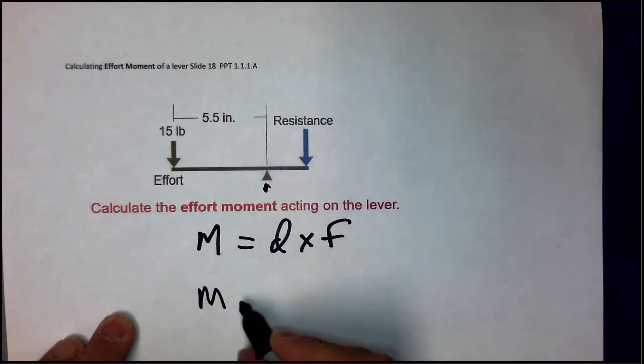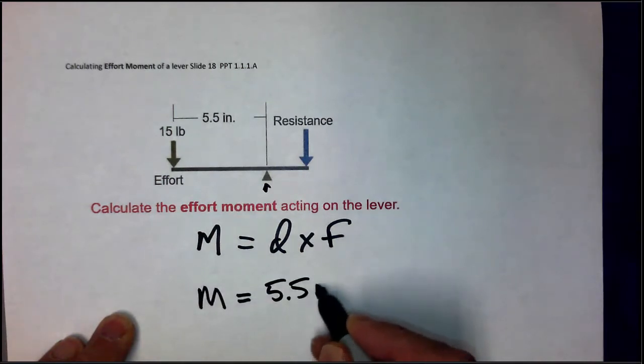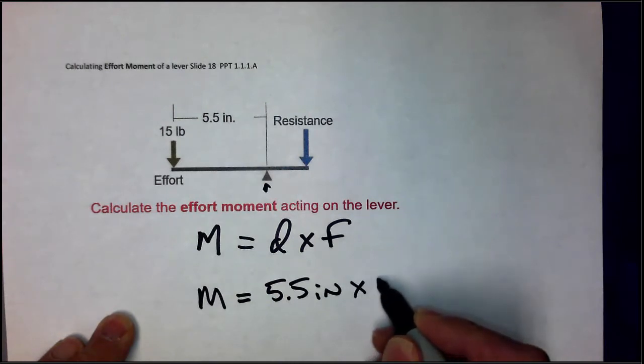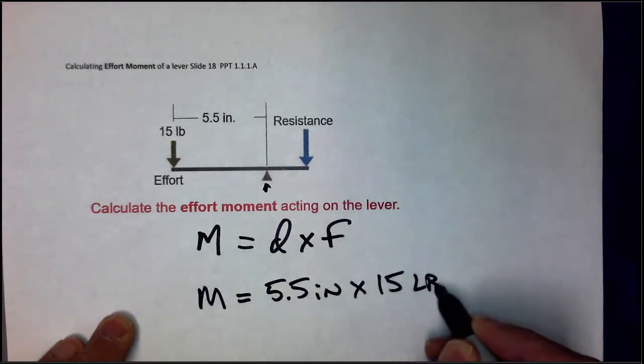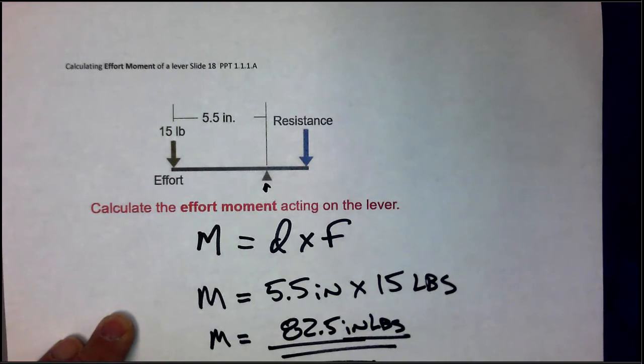So M, the effort moment, is equal to 5.5 inches times 15 pounds. And if you get your calculator out, you'll end up with an answer of 82.5 inch pounds. Please don't forget the units. And that's the effort moment acting on this lever.